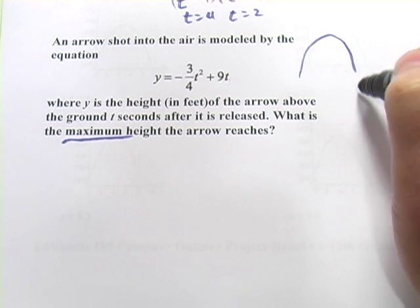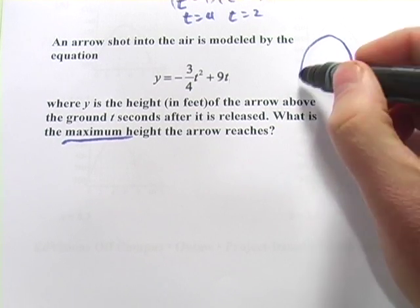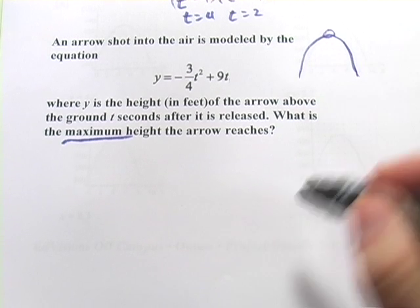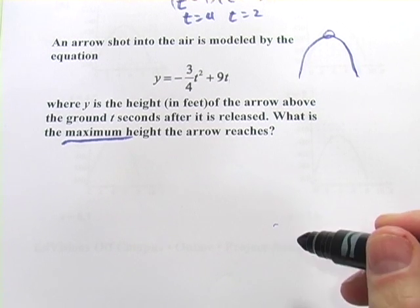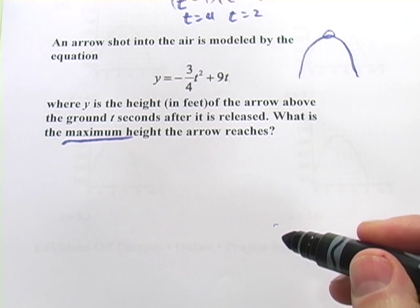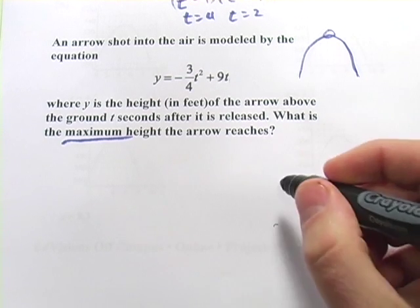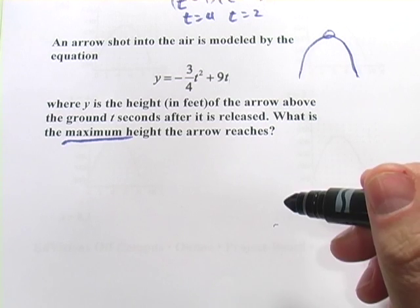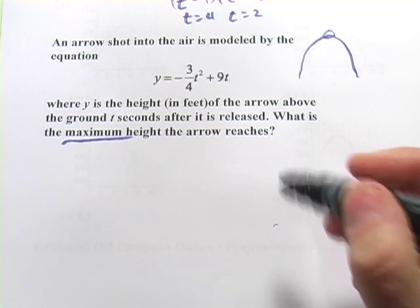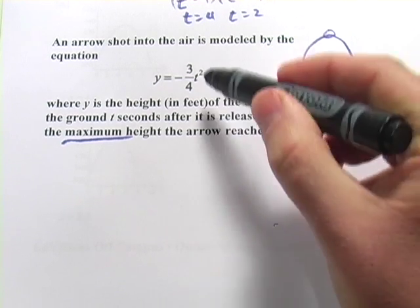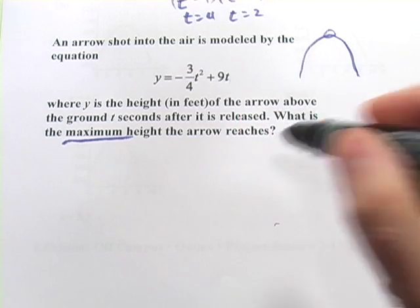Well, if we have a downward facing parabola here, the maximum height is going to be the vertex. And there's a really handy formula for finding out the vertex of a parabola. This formula will give you the x-coordinate. If you need the y-coordinate, you've got to plug it back in. Well, in this case, it's not x, it's t, but same difference.